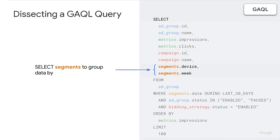Finally, we can put segments into our SELECT clause — here we have segments.device as well as segments.week. This actually has two different outcomes. One, and you've probably figured this out by now, when we do this we get columns for each of those different segments in our reporting result. But the other thing that happens when we put segments into our SELECT clause is that it acts like an implicit GROUP BY. So if we put segments here, all of our results will be grouped by device as well as week.